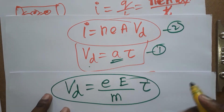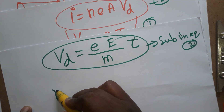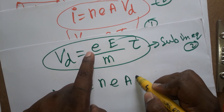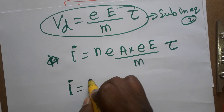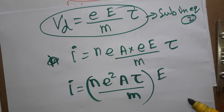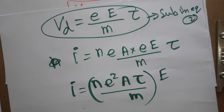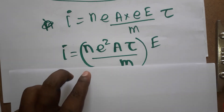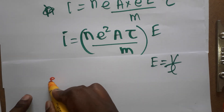Now substituting the drift velocity expression into equation two: I = nεA·(eE/m)·τ, so I = (ne²Aτ/m)·E, where E is the electric field or potential gradient. Here n is number of electrons, e is electron charge, A is area, τ is relaxation time, and E is the electric field (volts per unit length).